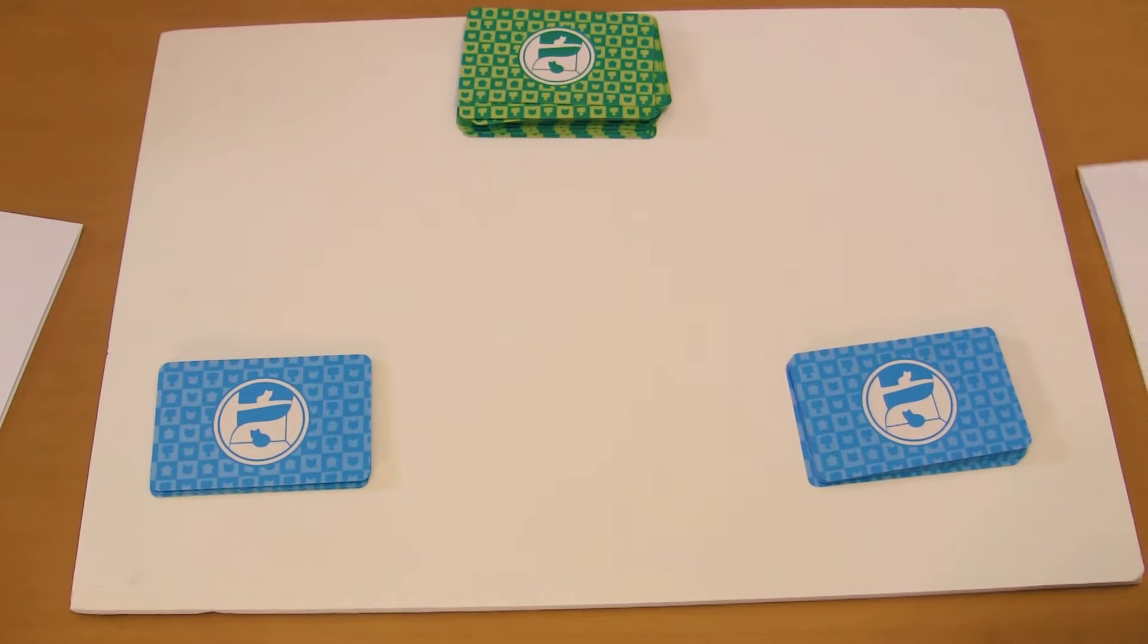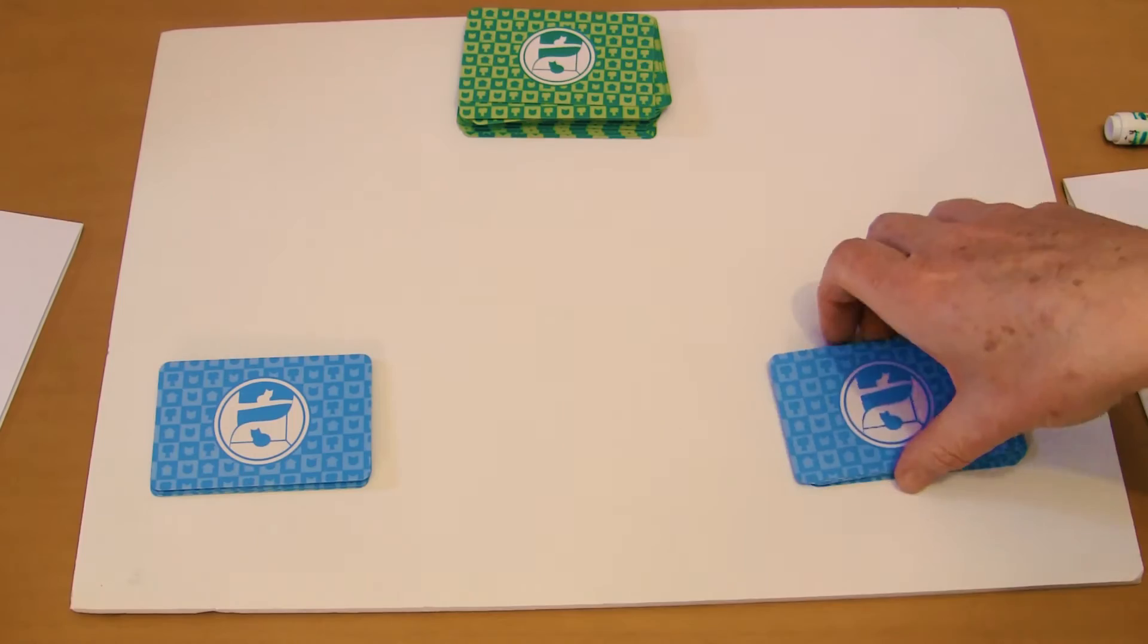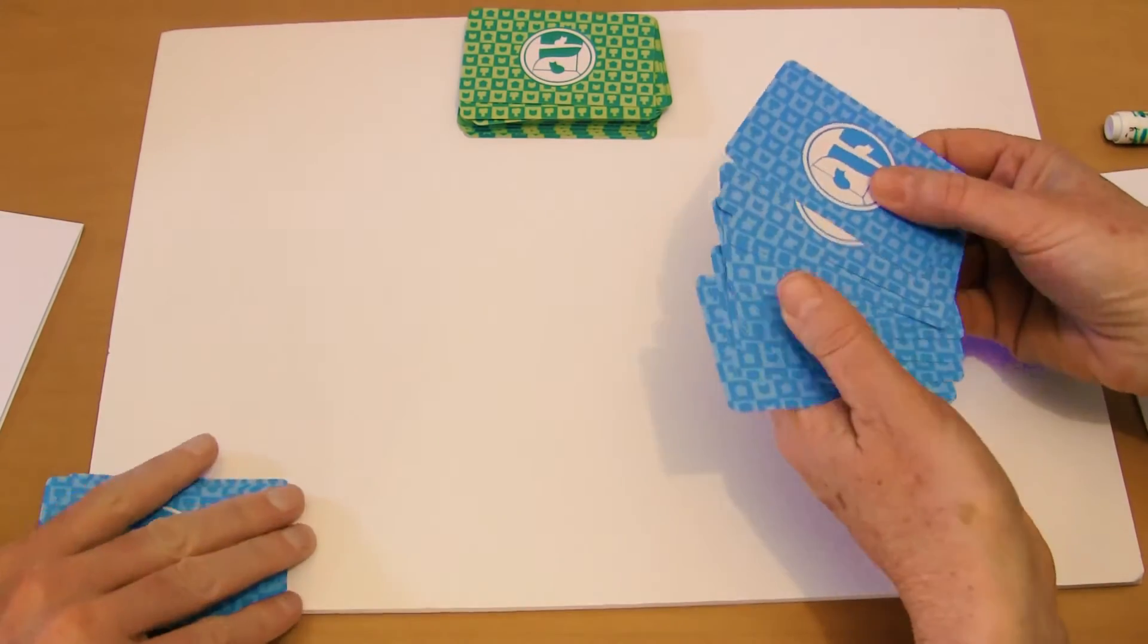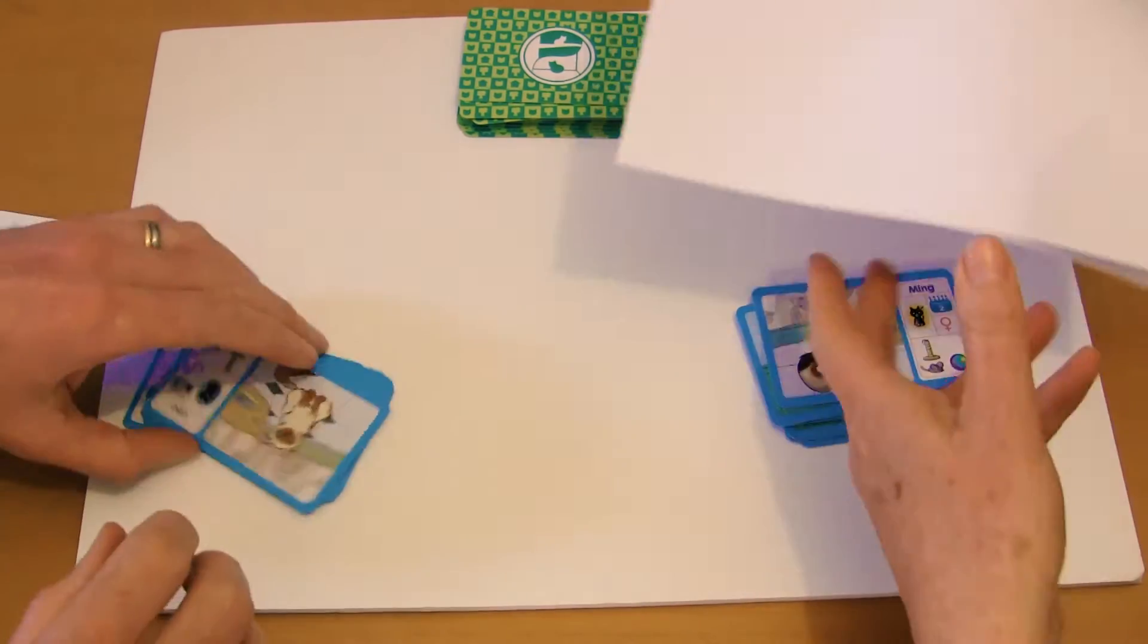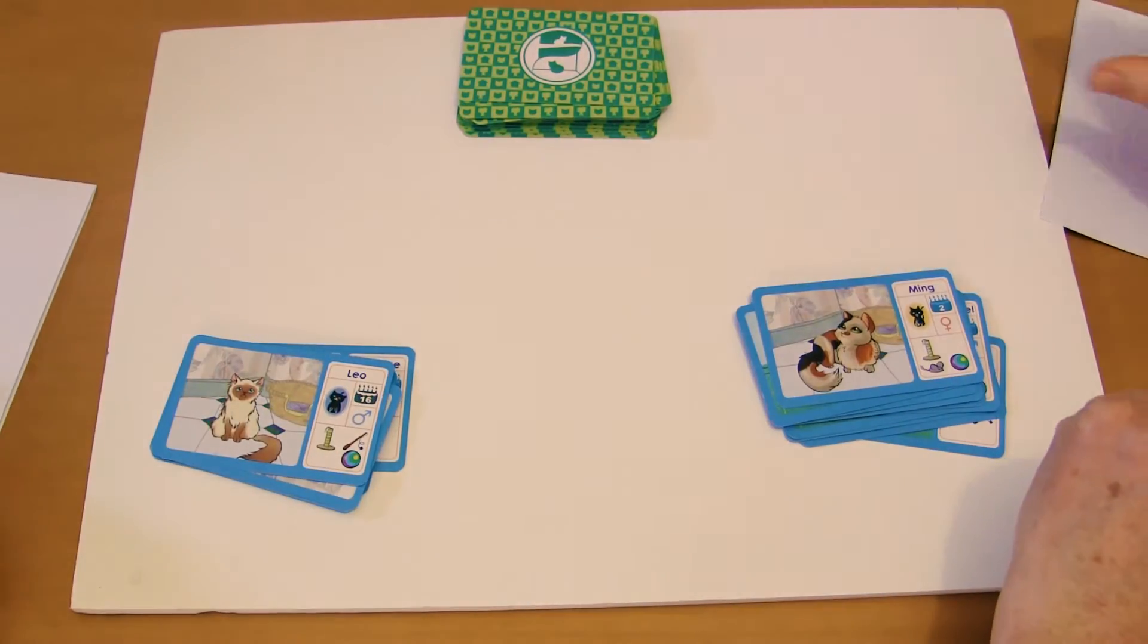Right, in this example we're going to be doing subtraction. So each player has 10 cards each, or 10 cat cards each, and we also have a piece of paper and a pen or a whiteboard or something like that each.